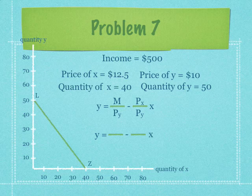So we have y equals the income, which is $500, divided by the price of y, minus the price of x divided by the price of y.